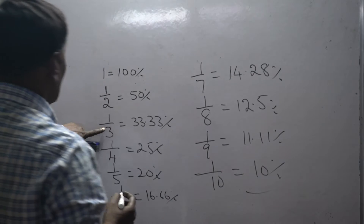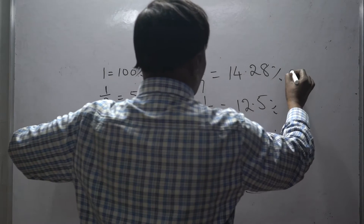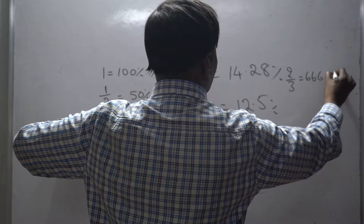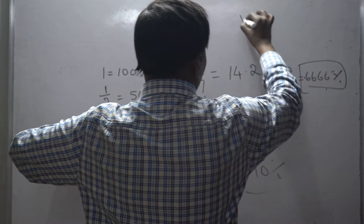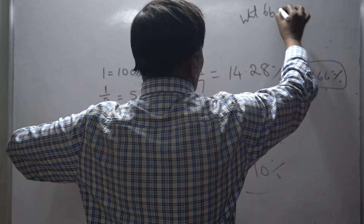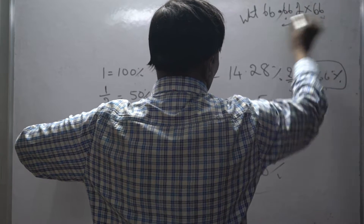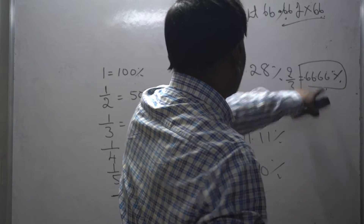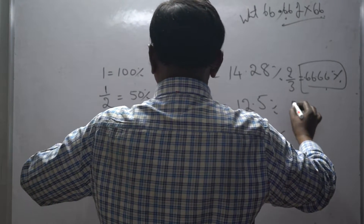From these we can get some more reciprocals. Since 1 by 3 is 33.33 percentage, then 2 by 3 is equal to 66.66 percentage. You should remember this, as they frequently ask questions like: what is 66.66 percentage of 66? So 2 by 3 is 66.66 percentage.